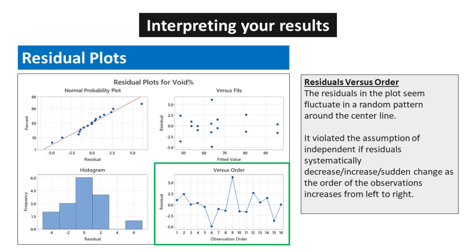In a residual versus order plot, it is essential to assess the pattern of the residuals to ensure that the assumption of independence is not violated. Upon examining the plot, it is evident that the residuals fluctuate in a seemingly random pattern around the center line. Specifically, if the residuals systematically exhibit a decreasing, increasing, or sudden change as the order of the observations increases from left to right, it suggests a pattern or correlation within the data that contradicts the assumption of independence.